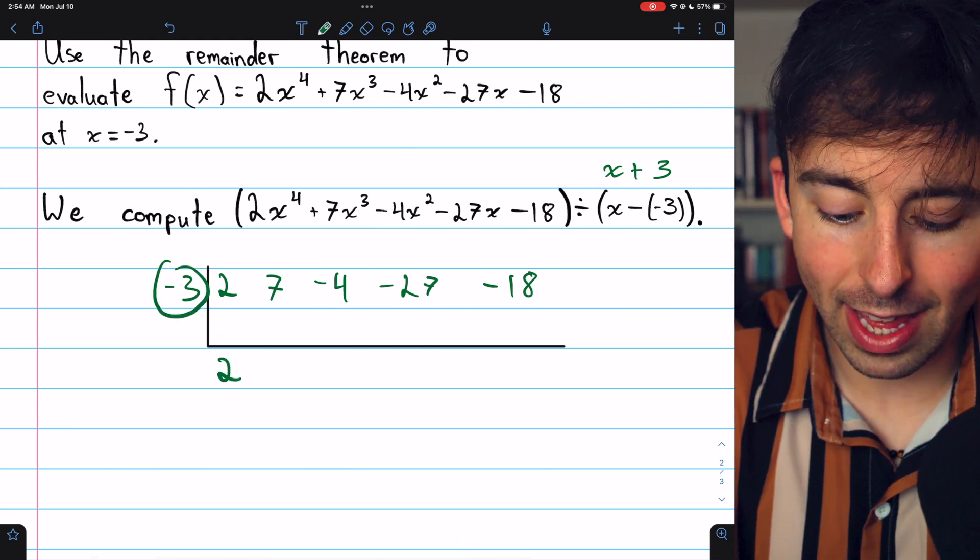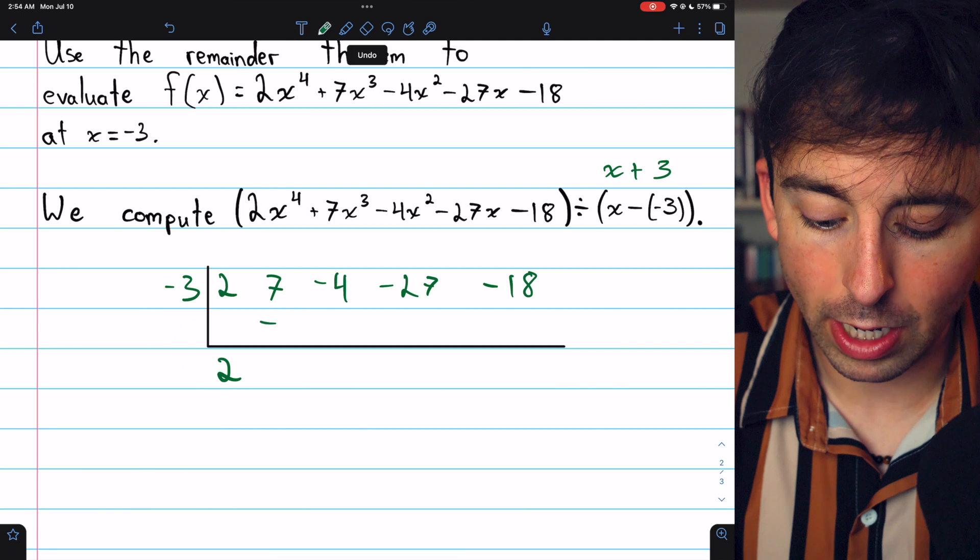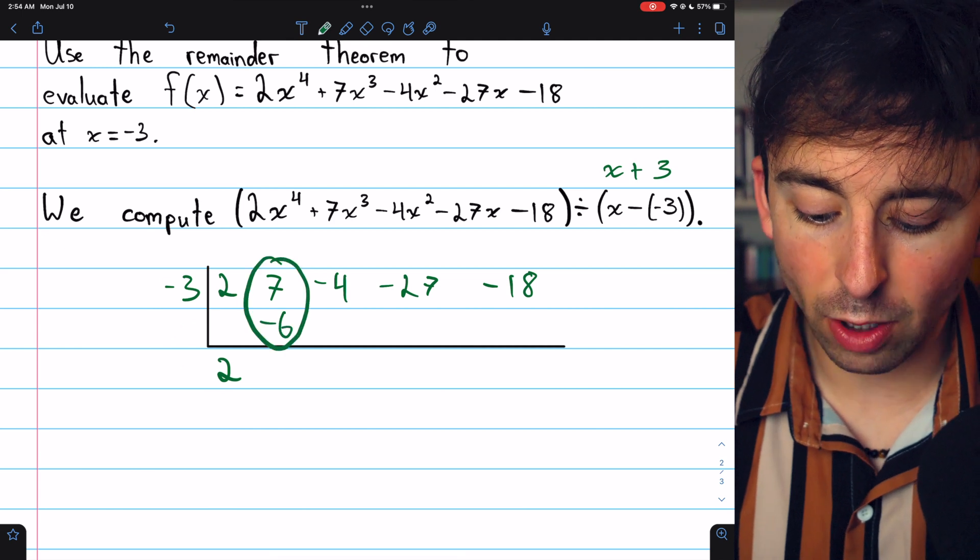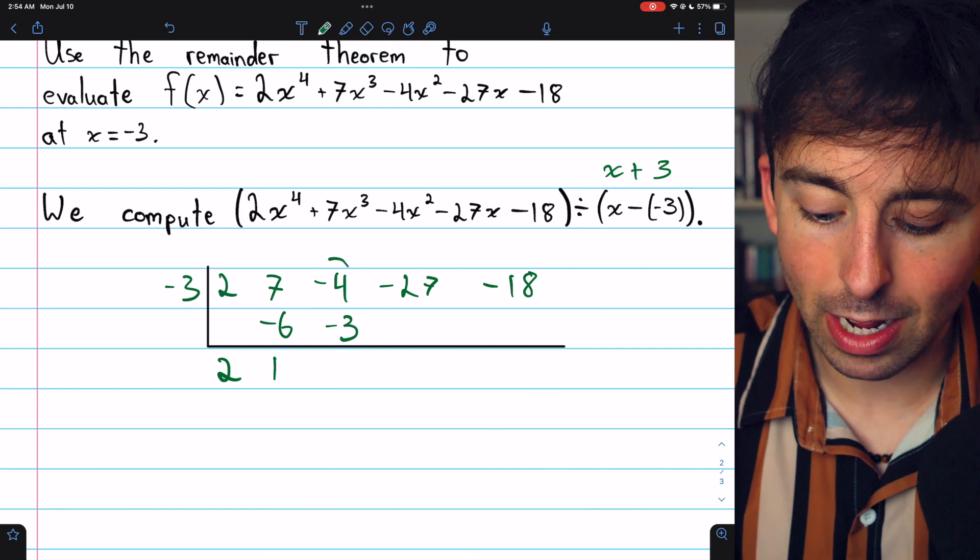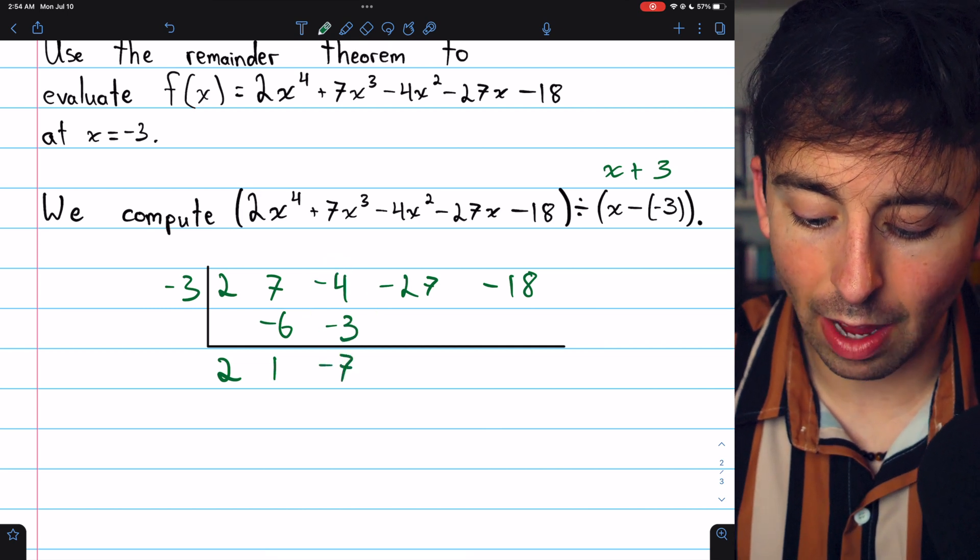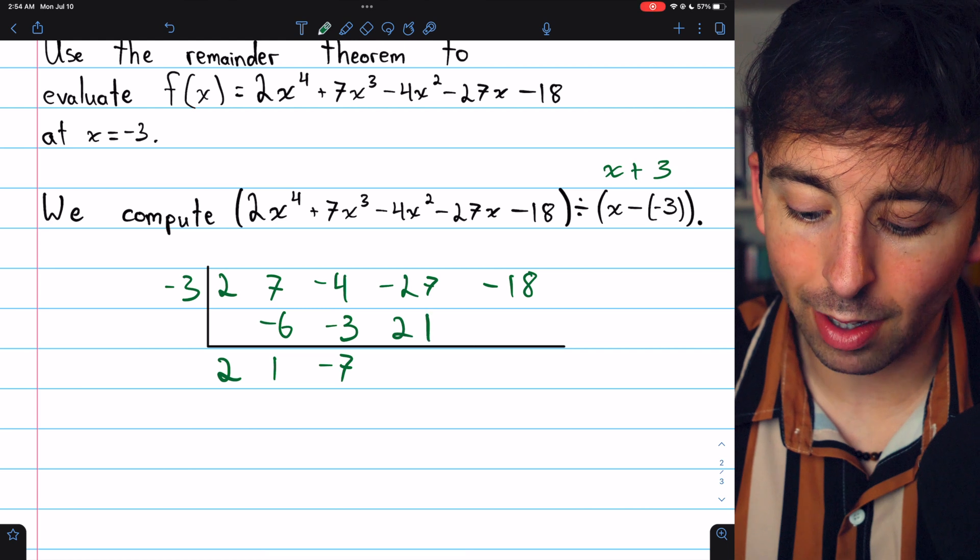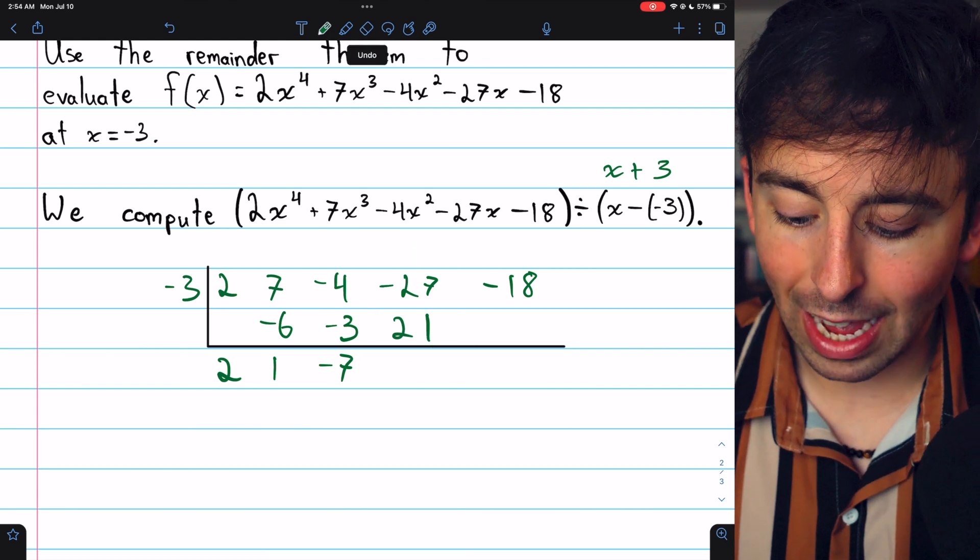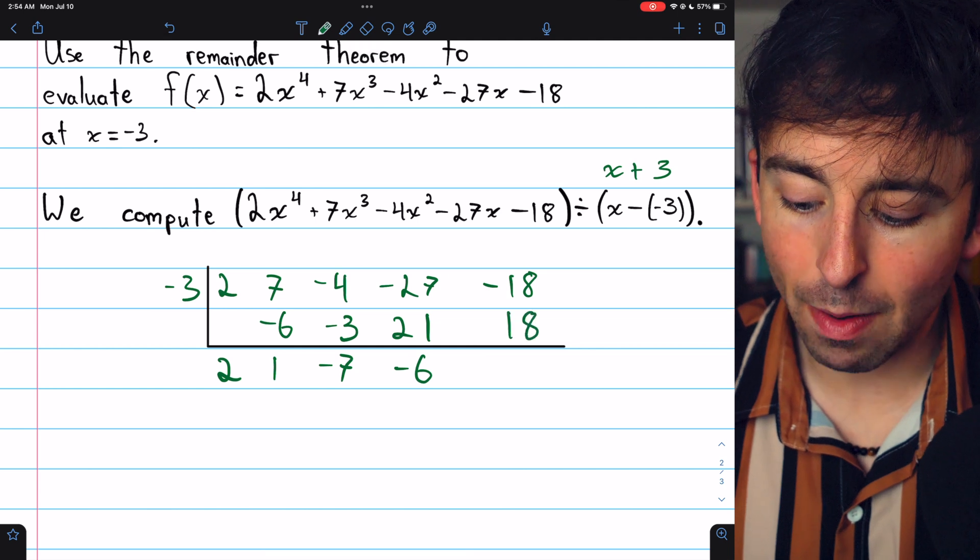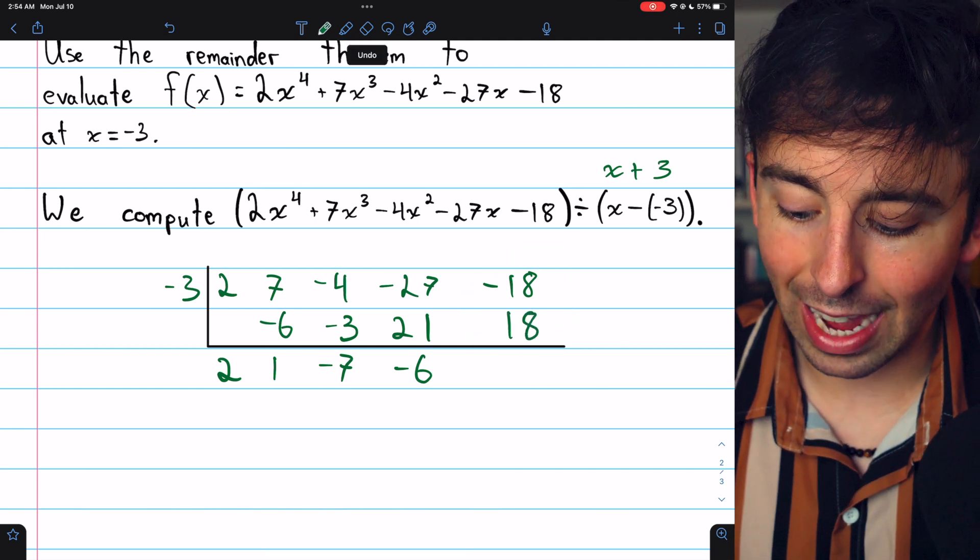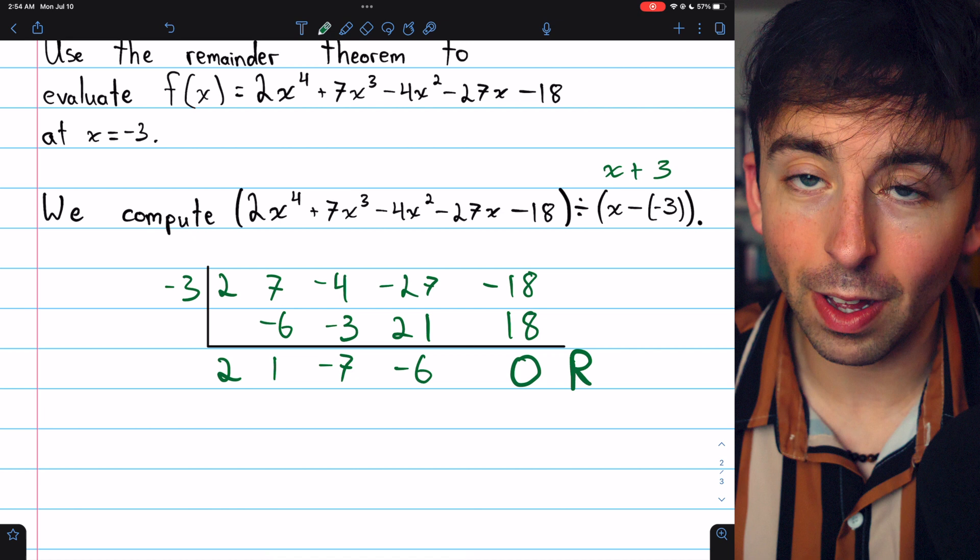Let's see. Begin by bringing the 2 down, then hit it with a factor of negative 3. That's negative 6. Add those together to get positive 1. Hit it with a negative 3 to get negative 3. Add those together to get negative 7. Hit this with a factor of negative 3 to get positive 21. Add those together to get negative 6. And then hit this with a factor of negative 3 to get positive 18. Add those together to get our final remainder of 0.